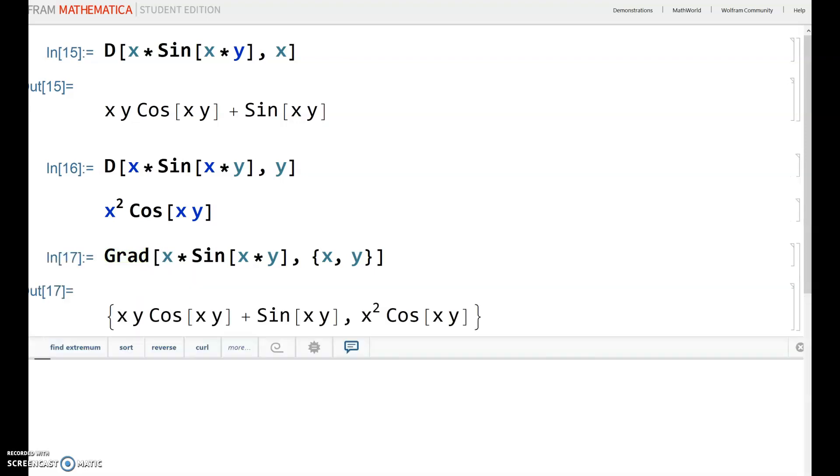It gives you a vector where the first element is the derivative with respect to that first variable, in this case x - xy cosine xy plus sine xy. The second element of that vector is the derivative with respect to whatever that second variable was that was put in the curly brackets.